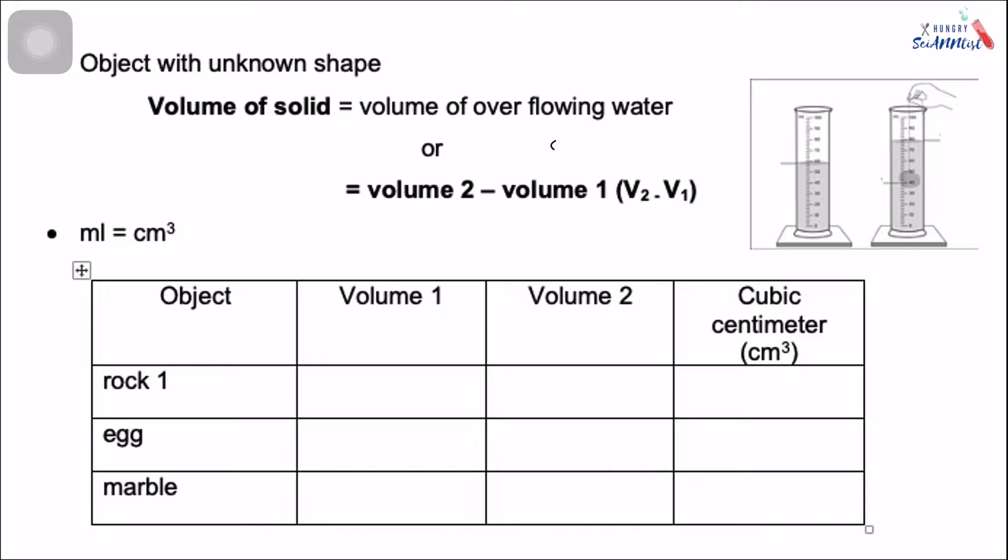Next, finding the volume of unknown shaped objects. So how do we do that? We need to find the volume of the water before putting the object, then the volume of the water after we put the object inside the graduated cylinder. Then we need to subtract volume 2 minus volume 1, and we are going to write the answers here.